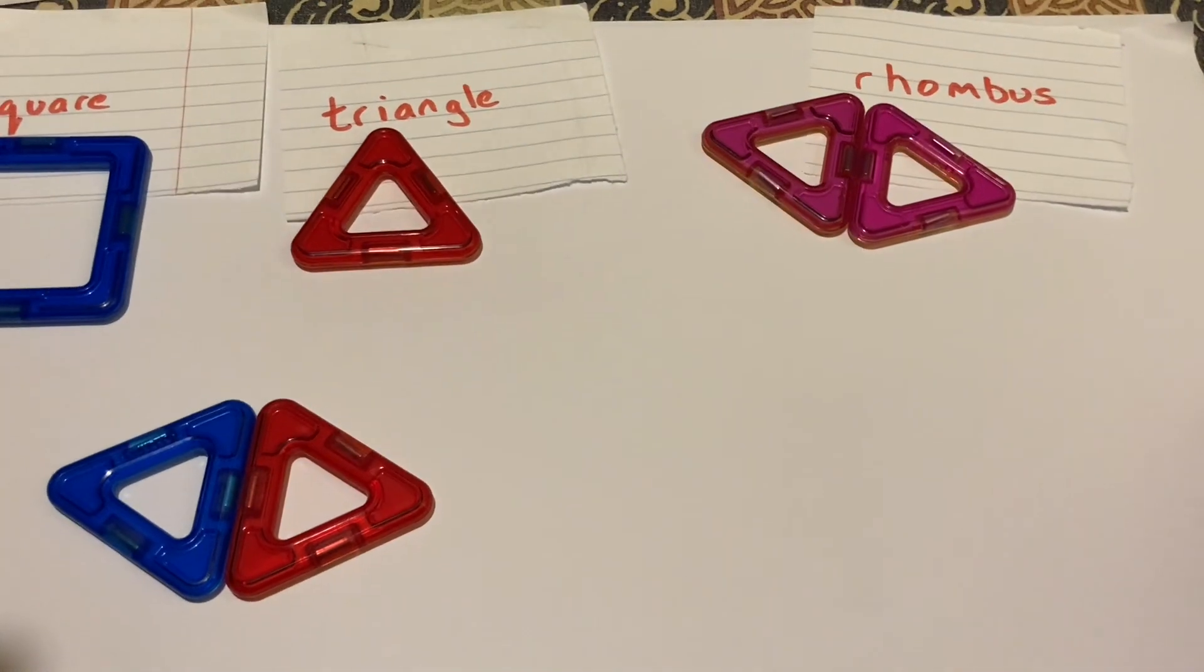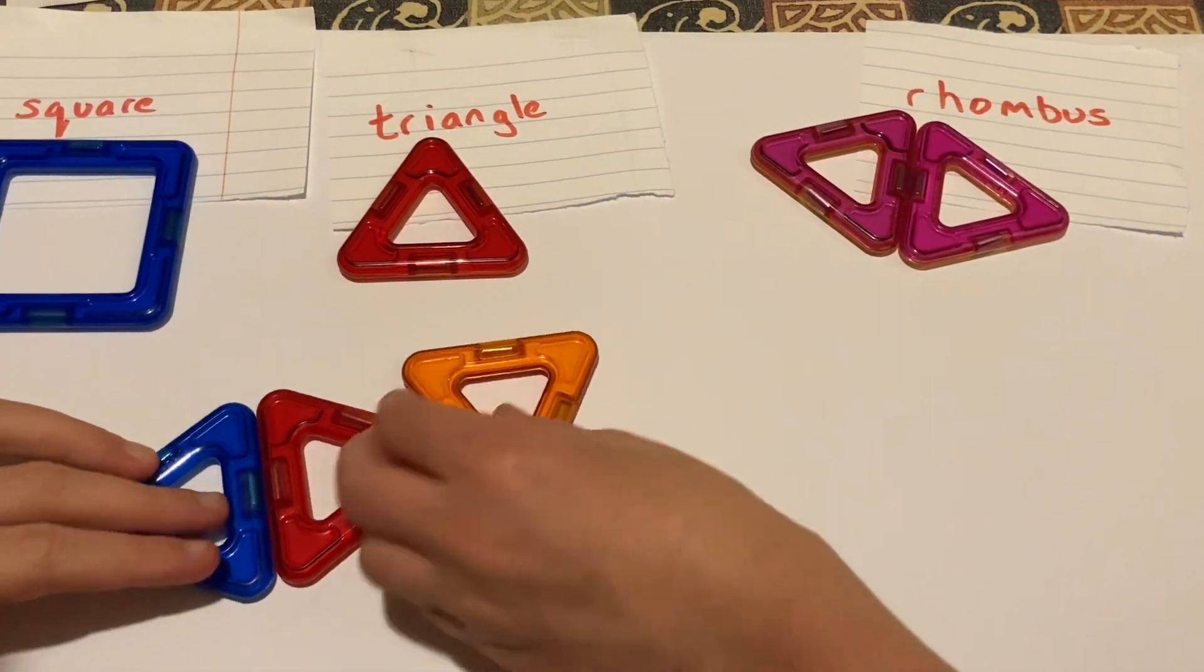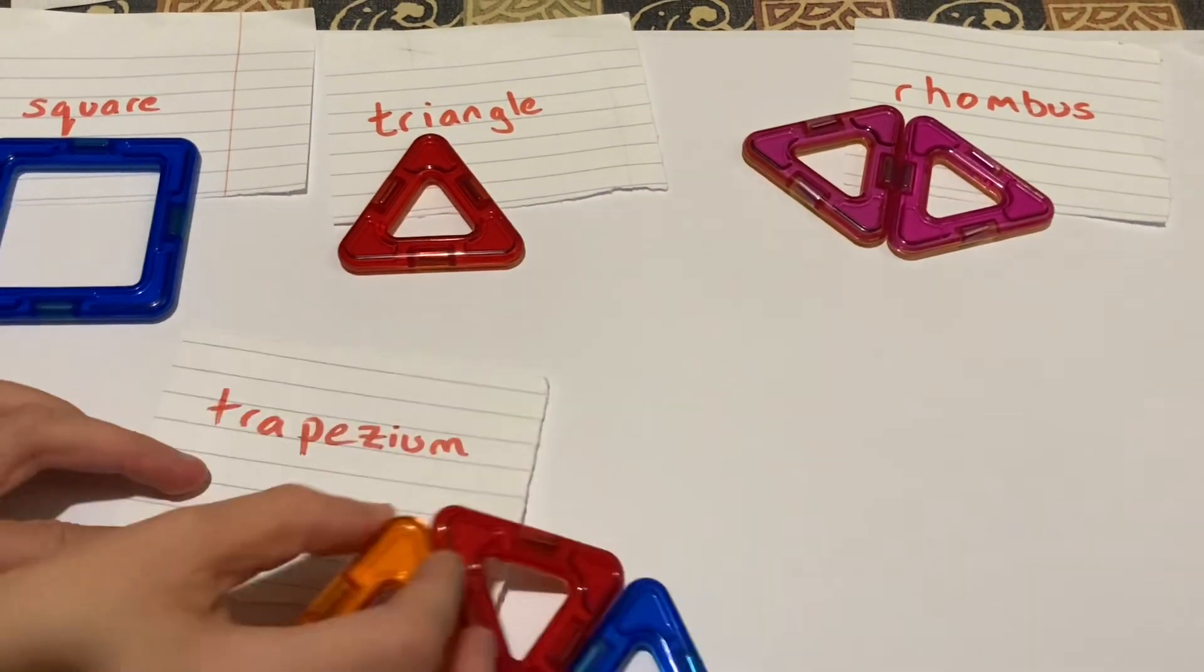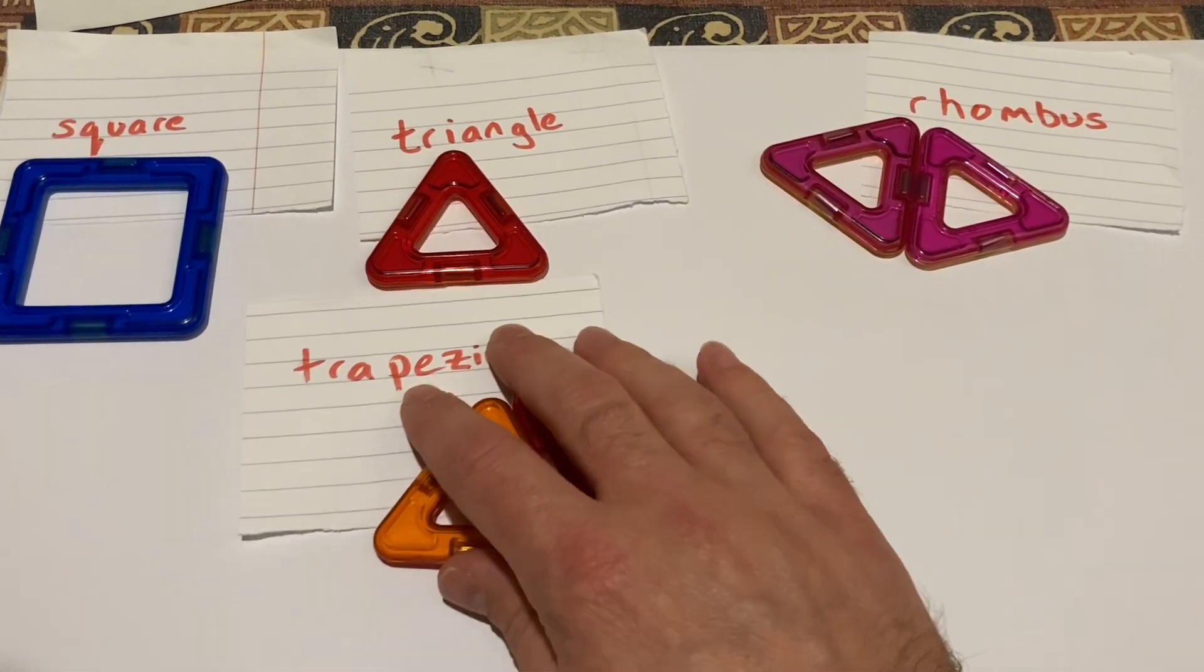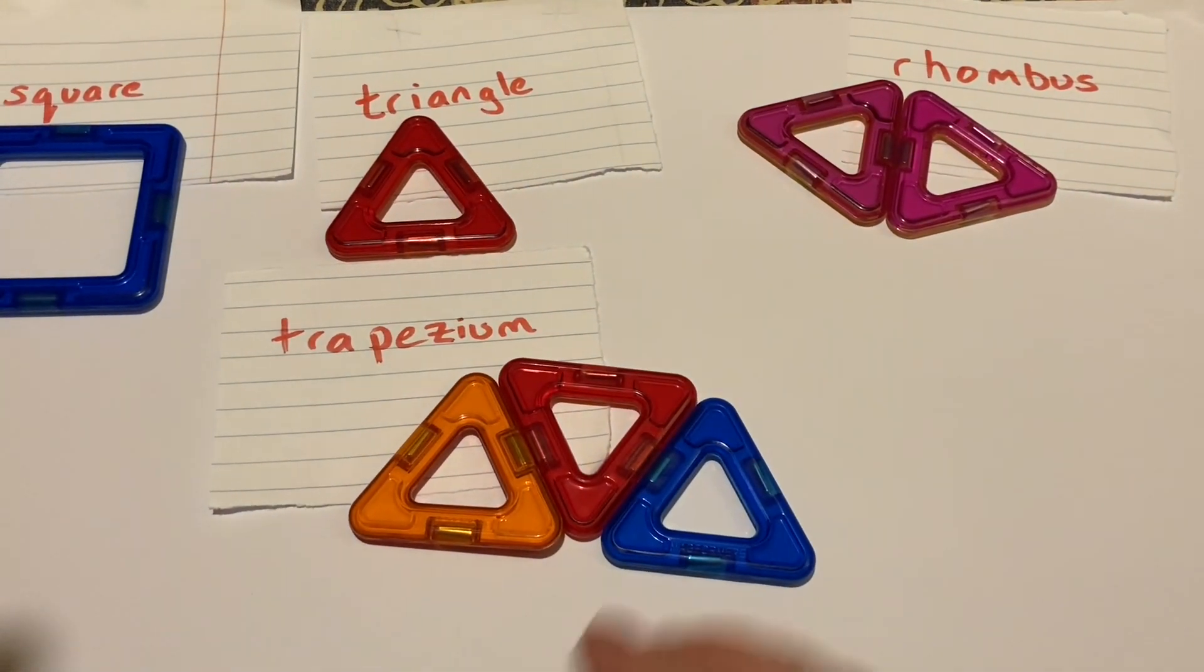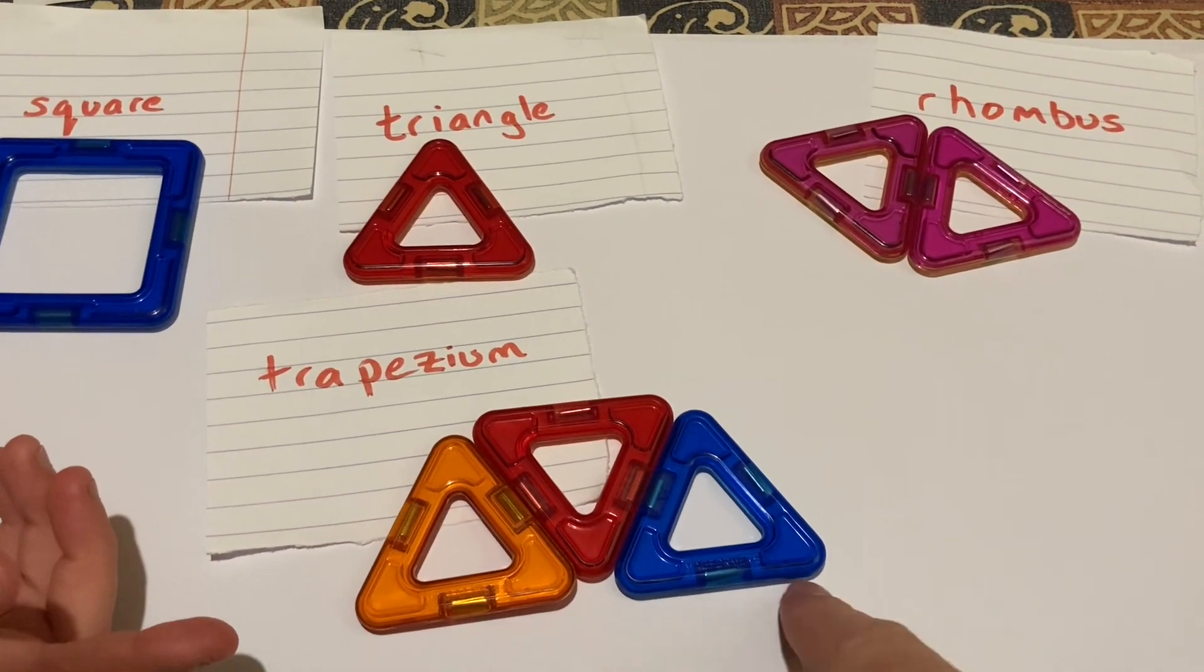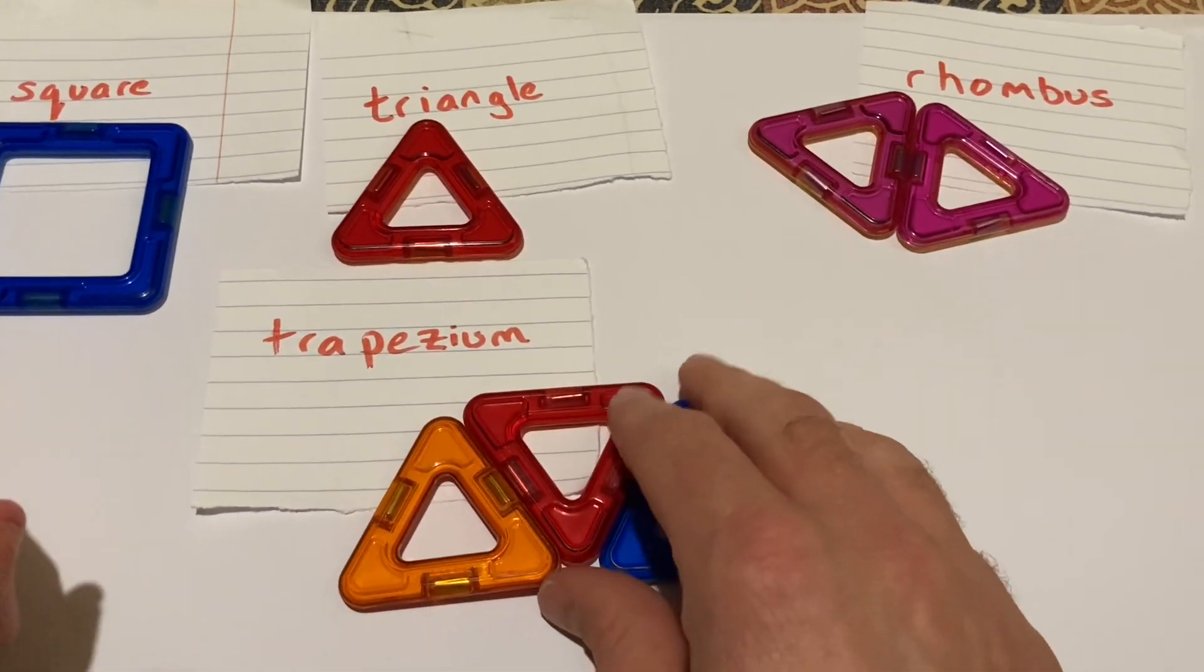If we were to put three triangles together, you would get a trapezium. And what can you tell me about a trapezium? Well, it has four sides on the outside. It's also a quadrilateral.